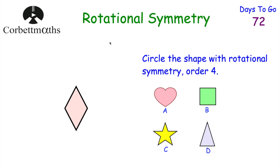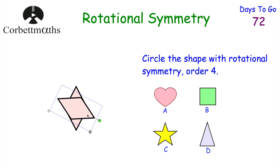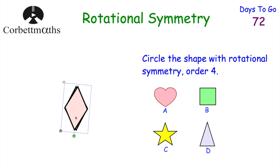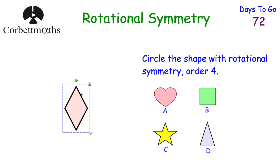To find the order of rotational symmetry, rotate the shape through 360 degrees and count how many times it lands on itself. This rhombus lands on itself at 180 degrees and again at 360 degrees — that's twice. So the order of rotational symmetry for this rhombus is 2.